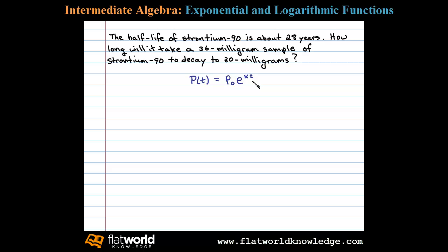And t is the time, in this case measured in years. Step one is to use the half-life information to find the exponential rate of decay k. In this case the initial amount p-naught is 36, so substituting that into the formula we have 36 times e to the k times t.